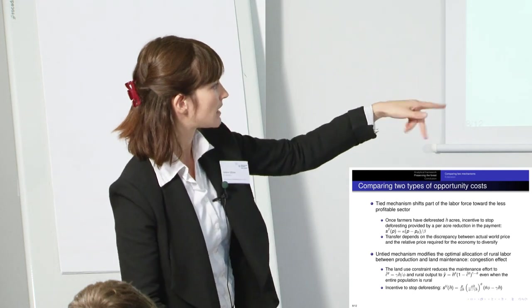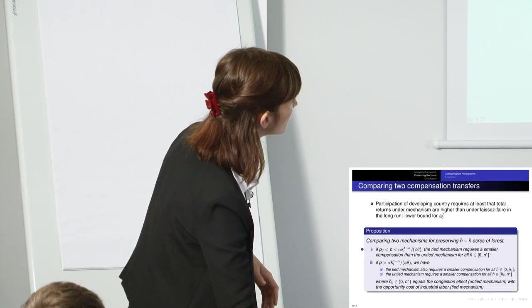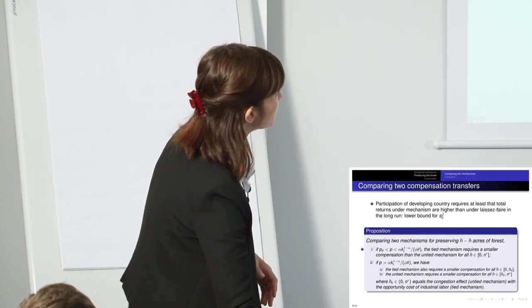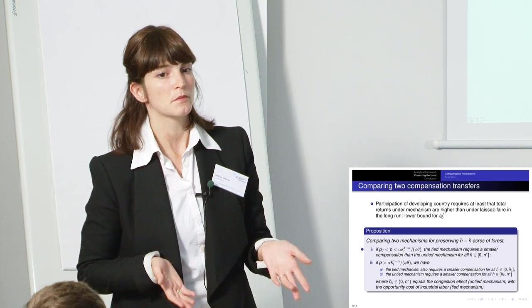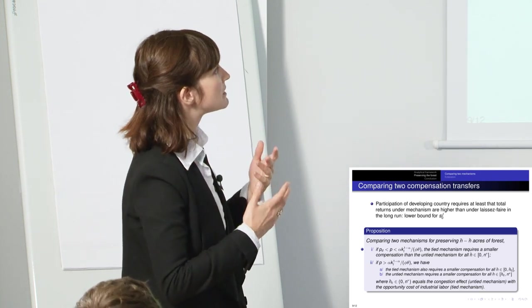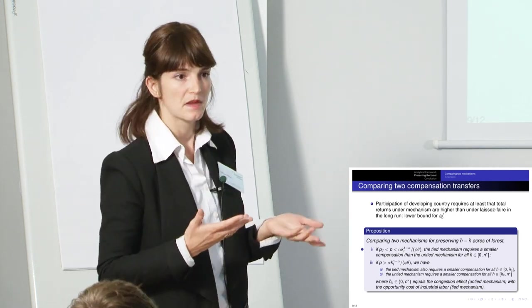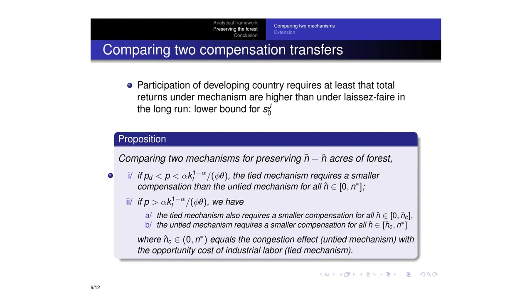And the incentive is endogenously defined. And here you can see it's a little bit more complex. In fact, it depends both on the world price but also on the size. So end hat is the size of the agricultural land that is available for production given the environmental target. And now what I'm interested in doing is basically comparing the cost of each type of transfer from the point of view of the donors because there are two different ways of defining the parameters.